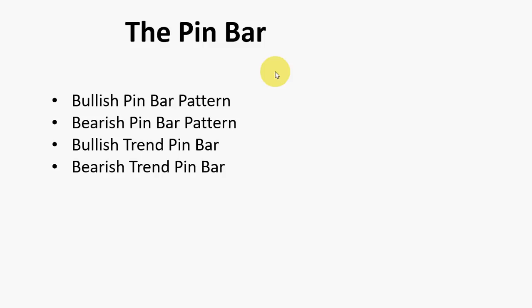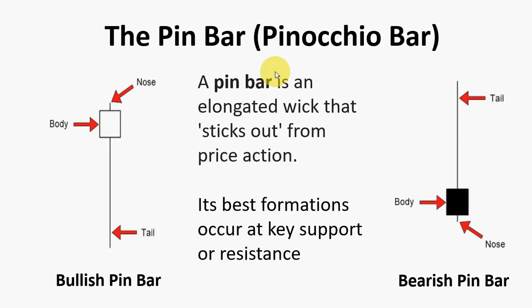So the first one is the pin bar. We will look at bullish and bearish pin bars, and we will look at bullish trend and bearish trend pin bars. So what is a pin bar? A pin bar, which is also known as the Pinocchio bar, is a single candlestick that gives a clue of a potential price reversal in the market. A pin bar is an elongated wick that sticks out from the candlestick. Preferably we look for a one-sided wick that is two times the size of the candlestick body.